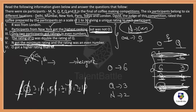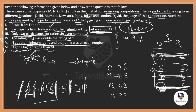O got a higher ranking than M, meaning M's rank is less than O's rank of 6. Among the remaining values 5, 7, 9 — only 5 is less than 6, so M=5. We are now left with 7 and 9 for the remaining participants P and R.